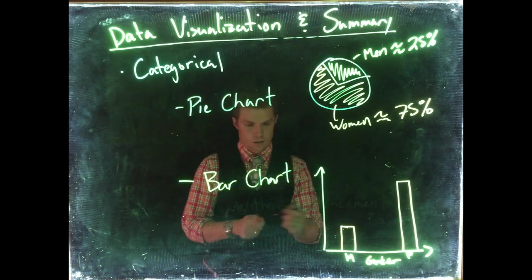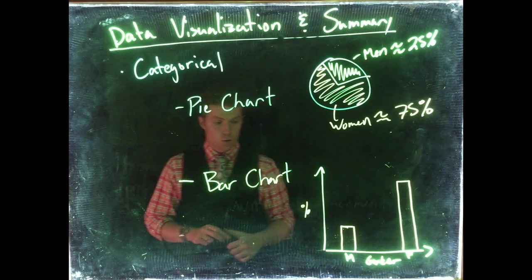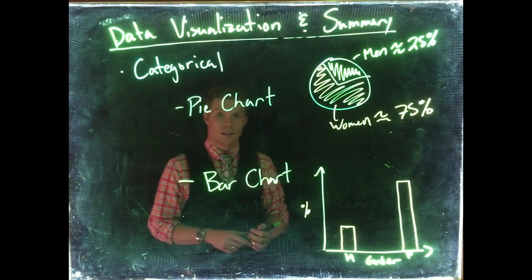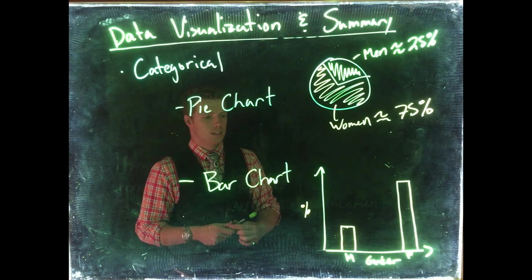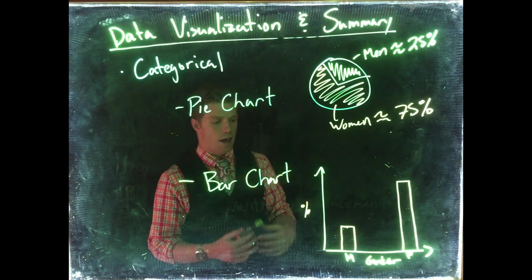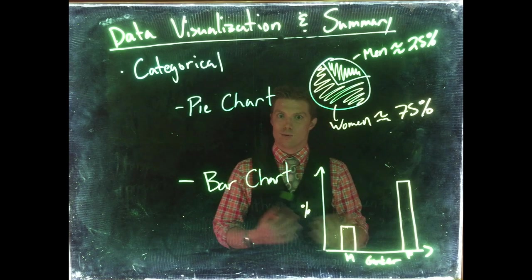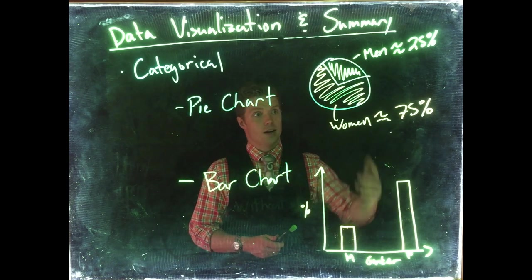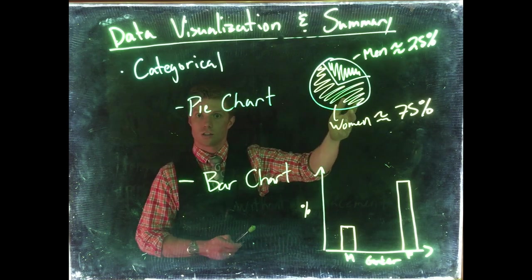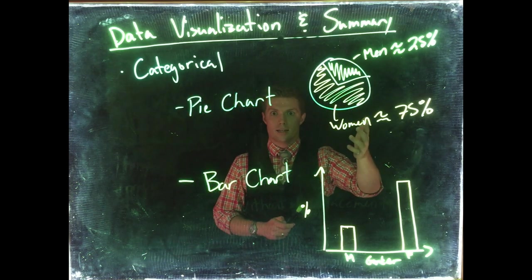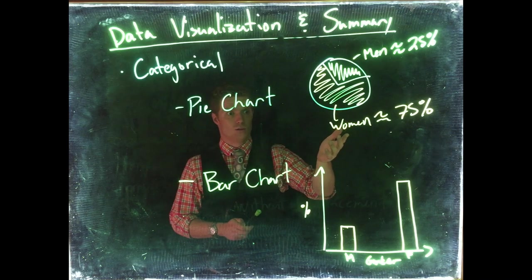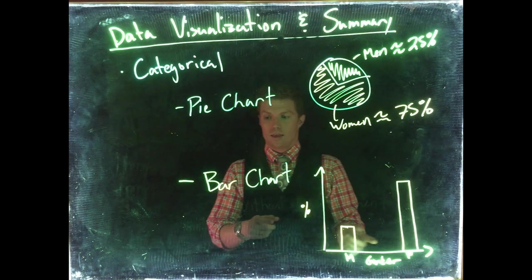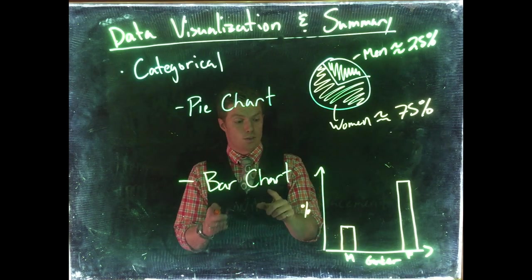One nice thing though about the bar chart that we can do is we can break this down into groups. So let's say that we also measured the hair color whether or not you were a redhead and we wanted to know can we break this down further. Now if I asked you what's the percentage of women who were redhead you'd be like I don't know but we can actually calculate this out and we can visualize it better with the bar chart.